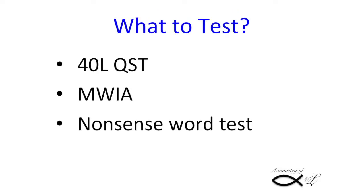There are two required tests and one optional test. The first required test is the 40L Quick Screen Reading Grade Level test. The next required test is the MWIA, a diagnostic reading test. The score on the 40L Quick Screen test will determine which version of the MWIA you need to use. The optional test is a quick nonsense word test, and it is also a diagnostic test.